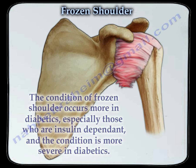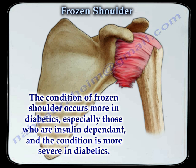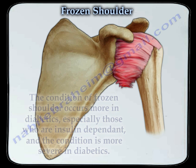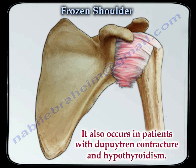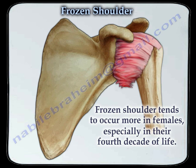The condition of frozen shoulder occurs more in diabetics, especially those who are insulin dependent, and the condition is more severe in diabetics. It also occurs in patients with Dupuytren contracture and hypothyroidism. Frozen shoulder tends to occur more in females, especially in their fourth decade of life.